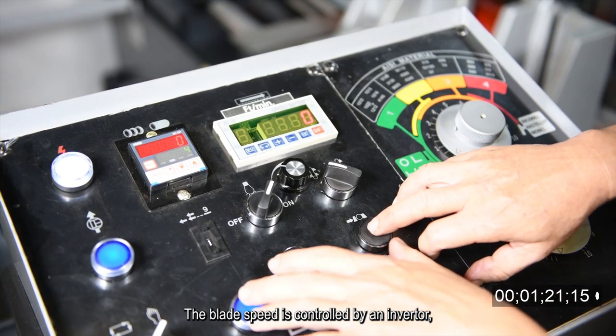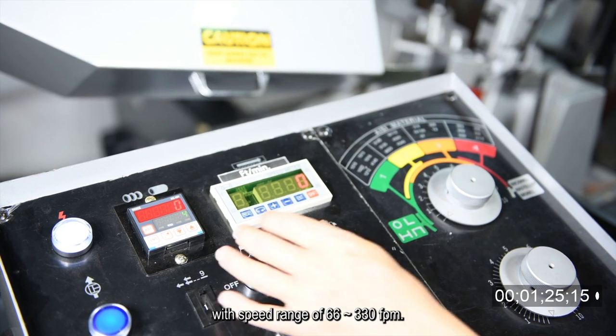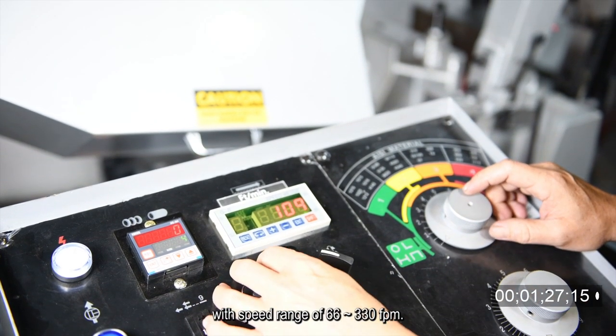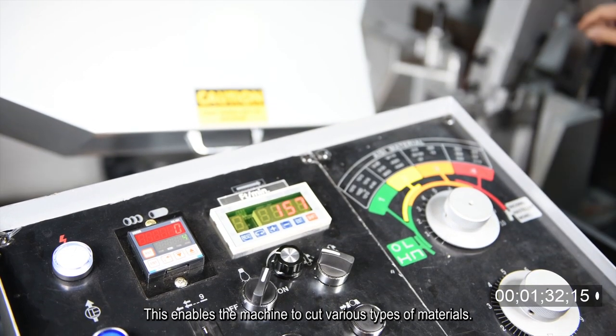The blade speed is controlled by an inverter providing variable speed change with a range of 66 to 330 feet per minute. This enables the machine to cut various types of materials.